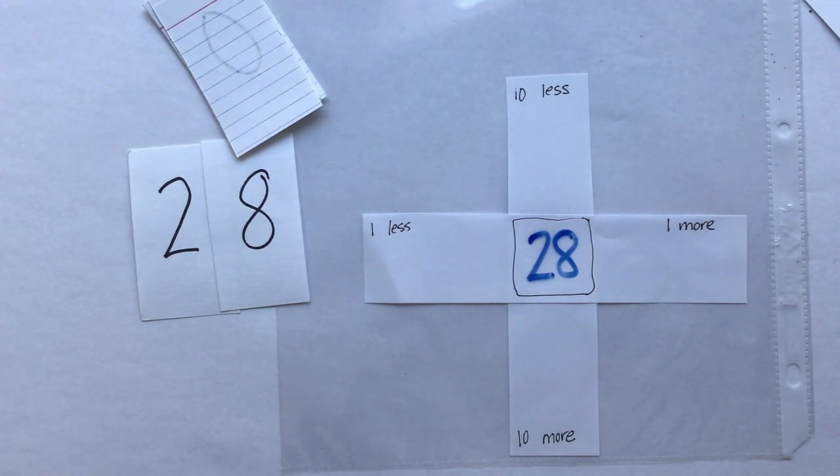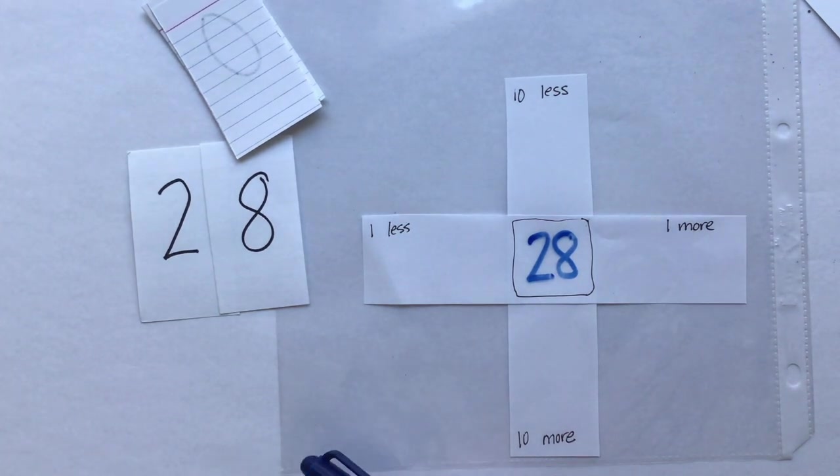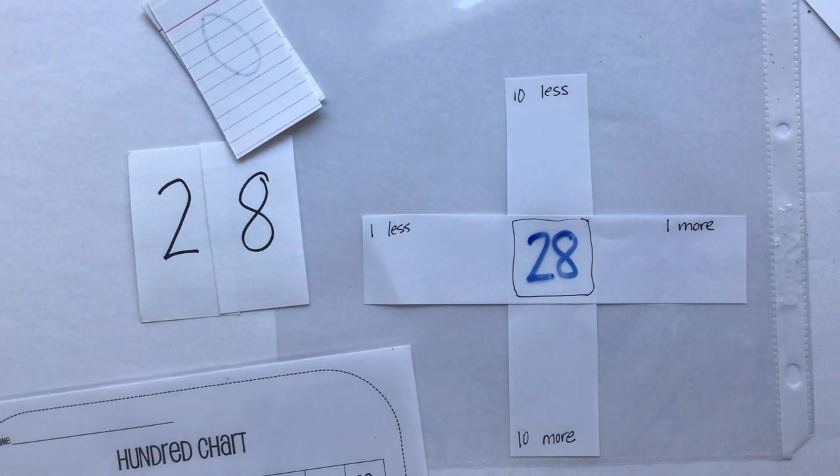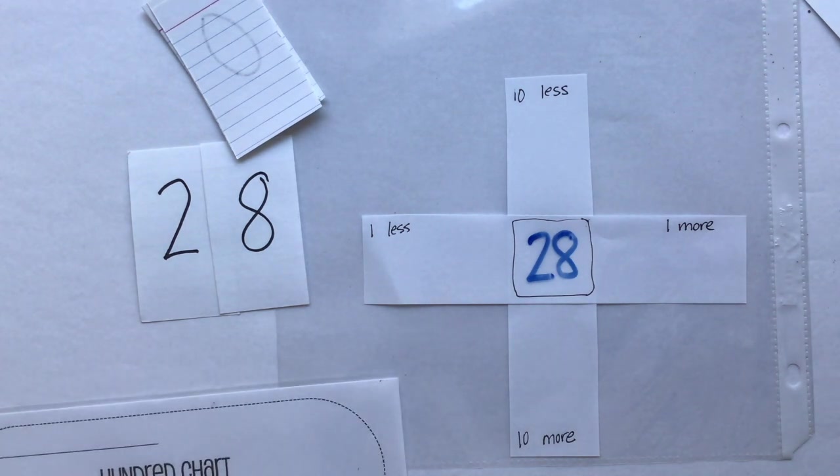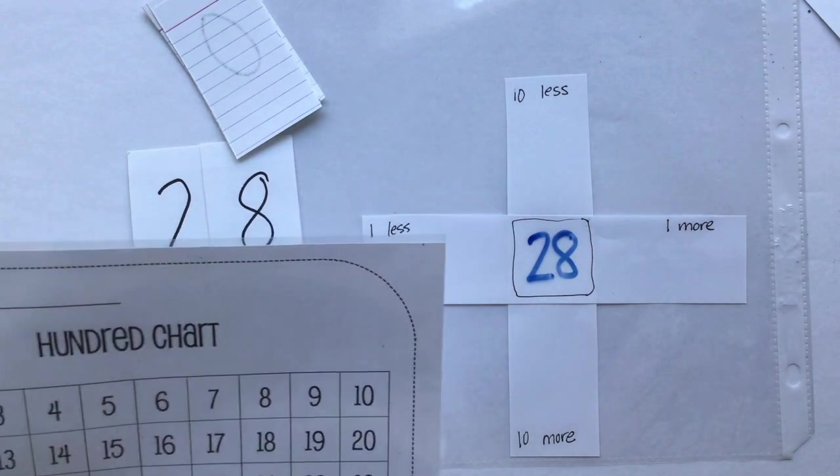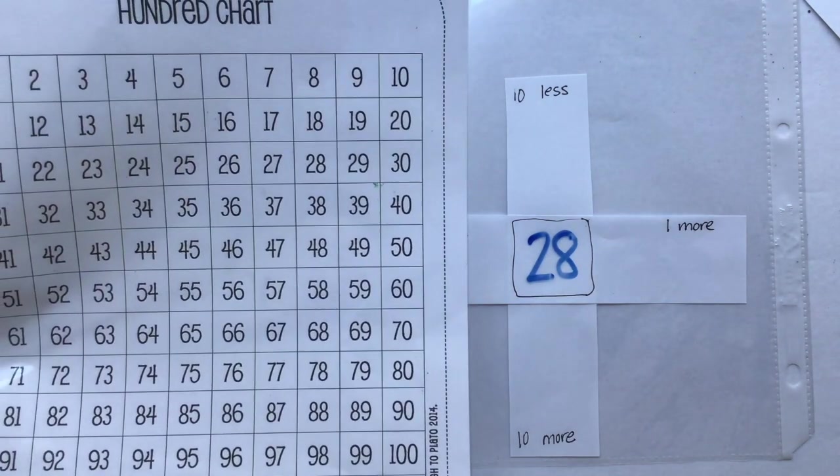You might be able to do one more, one less, 10 more, 10 less in your brain. If you can, go for it. But if you need to check the hundreds chart, let's get our counters up.